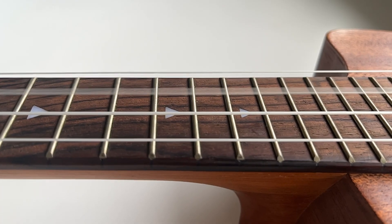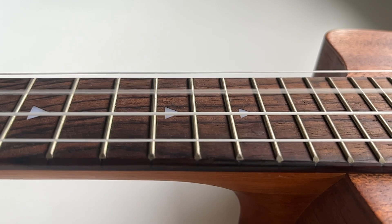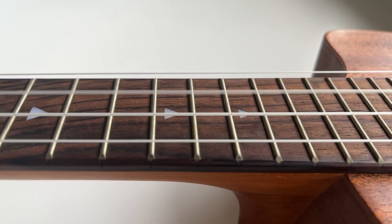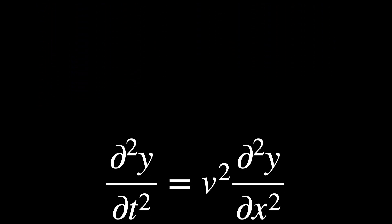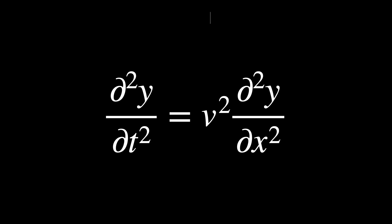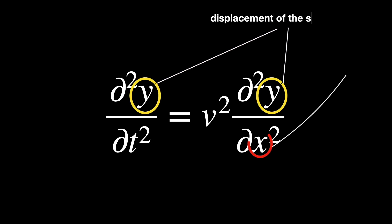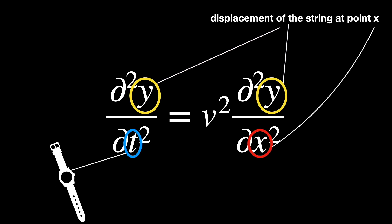When you pluck the string, it initially causes a single large wave. After the pluck, the string doesn't just settle back into a flat line — it starts vibrating, forming a pattern of smaller waves. This is known as the vibrating string problem, and the wave equation, here represented in its simplest form, is used to solve it. Here, y is the displacement of the string at a point x and time t, and v is the speed of the wave through the string.